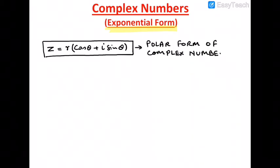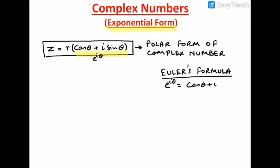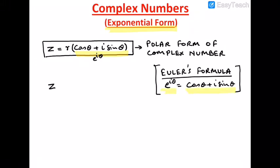Now, cos θ + i sin θ can be written as e^(iθ) because of Euler's formula. That formula states e^(iθ) = cos θ + i sin θ. So we just substitute e^(iθ) for cos θ + i sin θ in the polar form of a complex number.